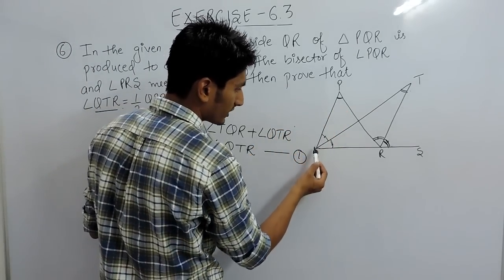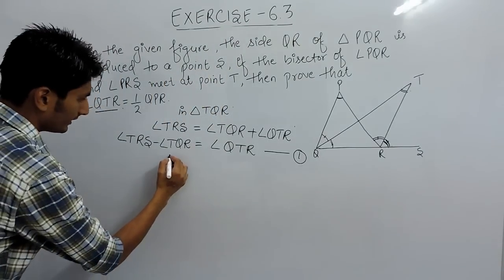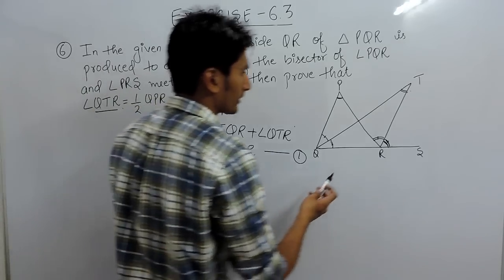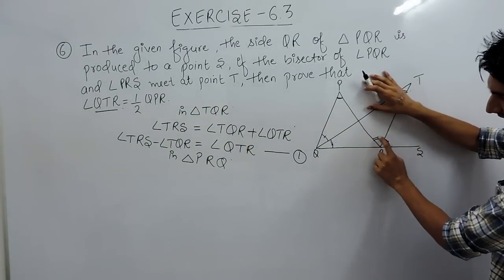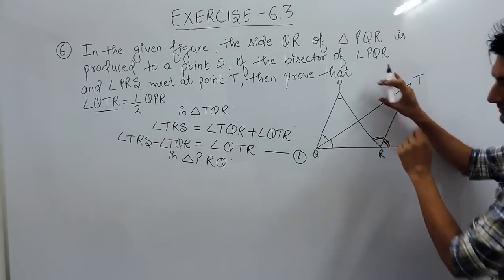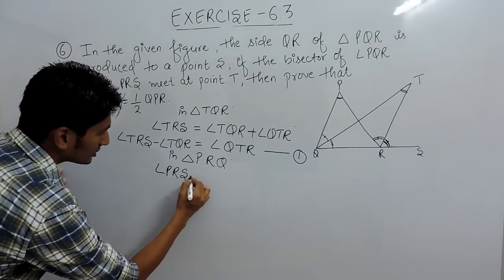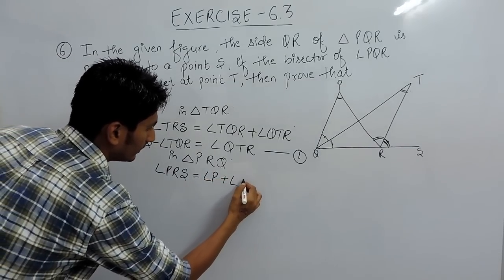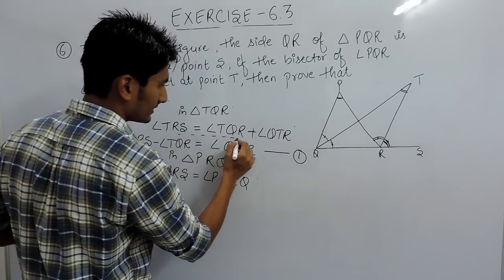After that, we consider triangle PRQ. In triangle PRQ, angle PRS is again an exterior angle, and this should be equal to the sum of the interior opposite angles — that is, angle P plus angle Q. So angle PRS equals angle P plus angle Q, because the exterior angle equals the sum of the interior opposite angles.